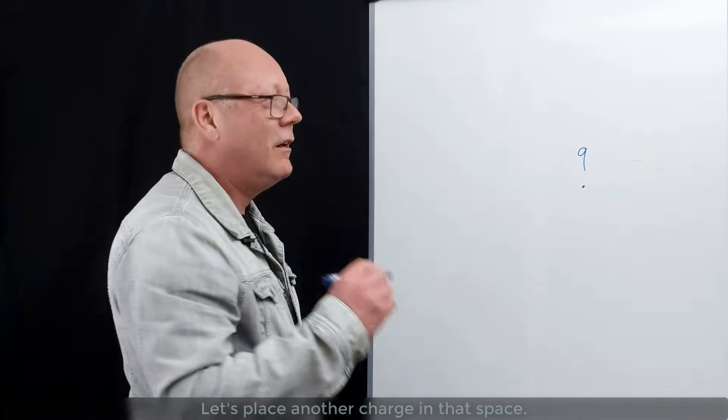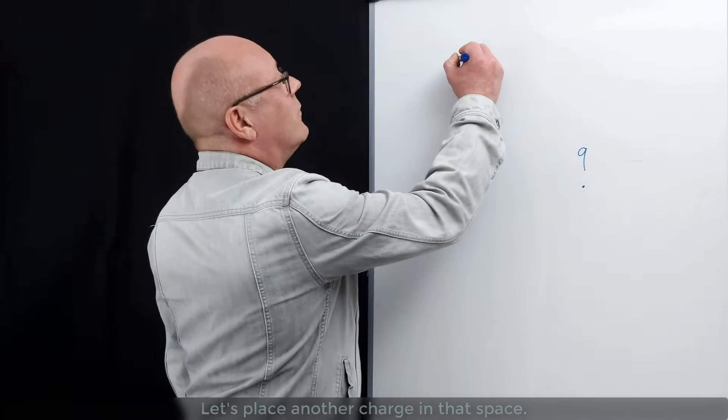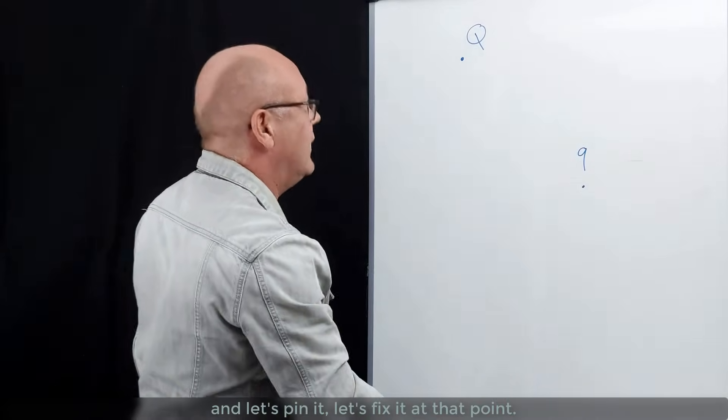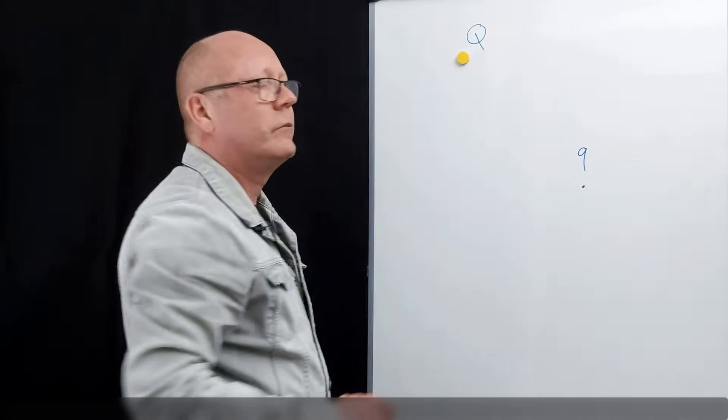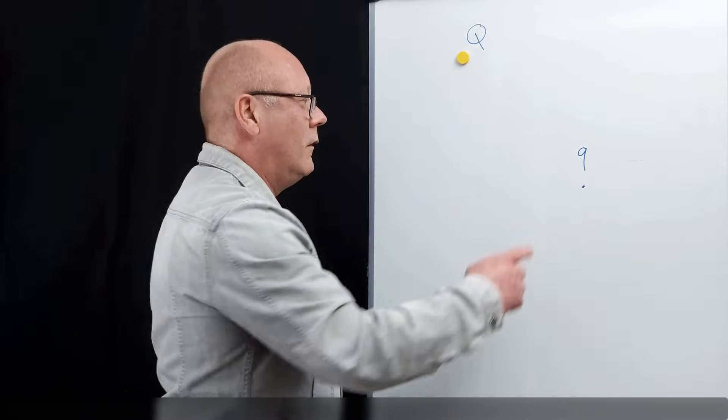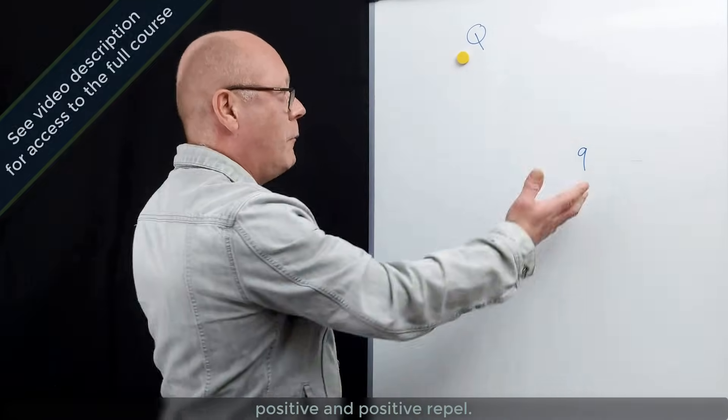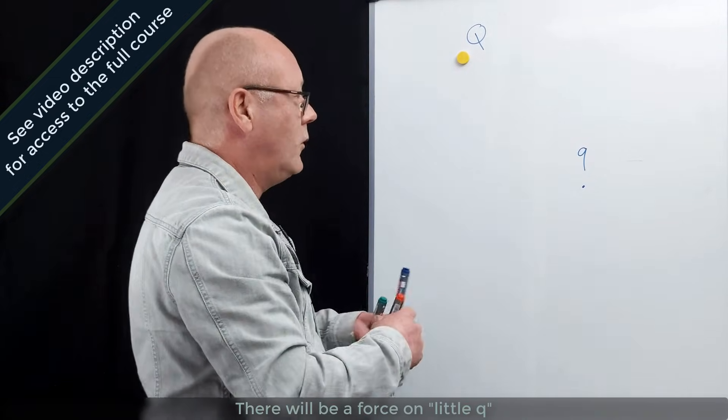Okay. So let's place another charge in that space, charge Q positive 2, and let's pin it. Let's fix it at that point. Little Q will experience a repulsion force. Yeah, positive and positive repel. So there'll be a force on little Q.